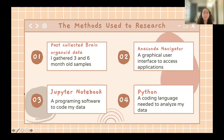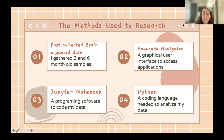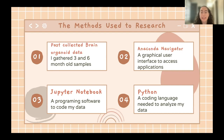The methods for my research: first, I used a past collection of brain organoid data that I could input into my coding system. I gathered three- and six-month-old samples to look at the differences between the two. Second, I used Anaconda Navigator, a graphical user interface (GUI) to access applications. Third, I used Jupyter Notebook, a programming software where you can keep all your documents and code in one place. Finally, I used Python as my coding language to analyze the brain organoid data from many different angles.